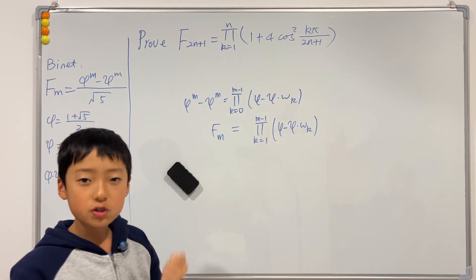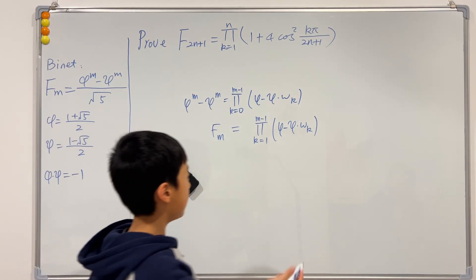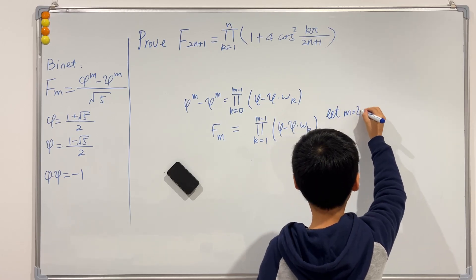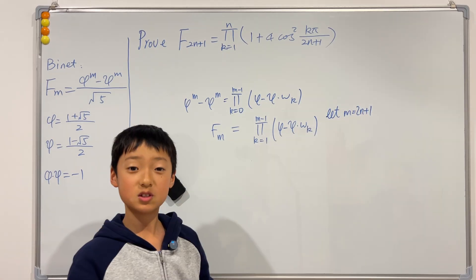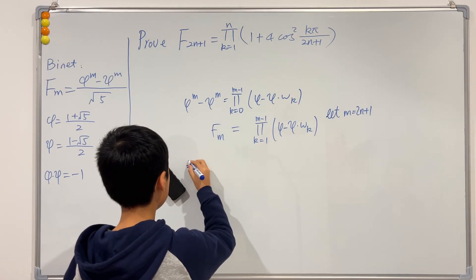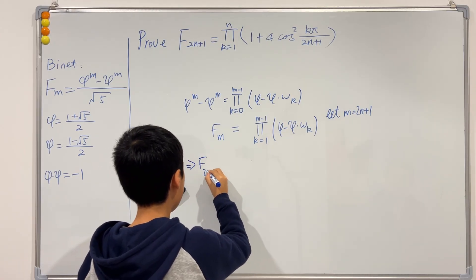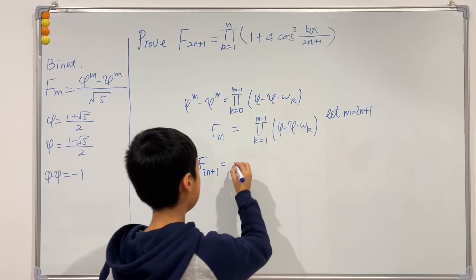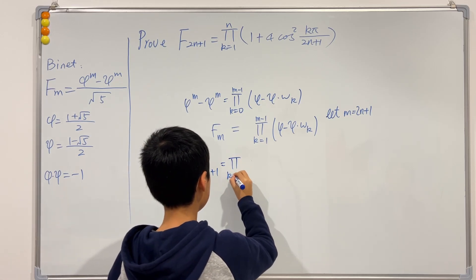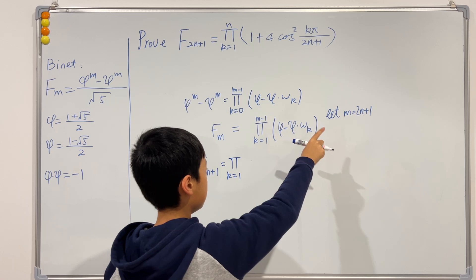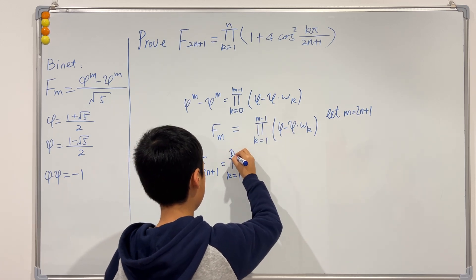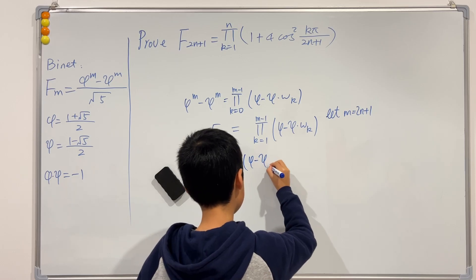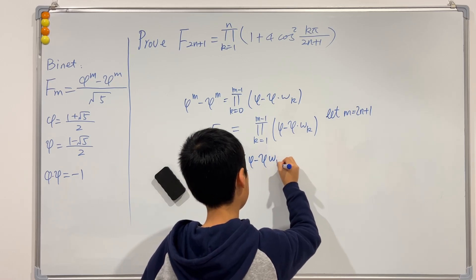Since we want to prove that F(2n+1) equals a certain product, we let m = 2n+1. So F(2n+1) equals the product where k goes from 1 to 2n of (φ − c·ω_k), where ω_k = e^(2kπi/(2n+1)).